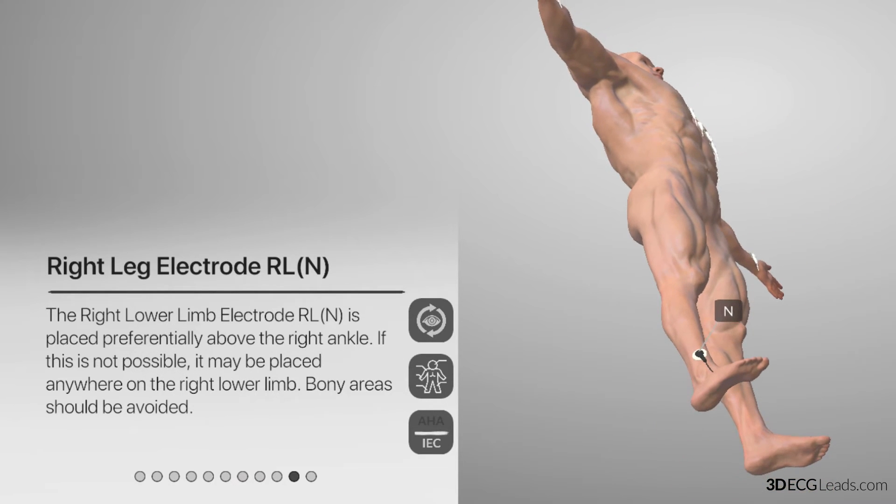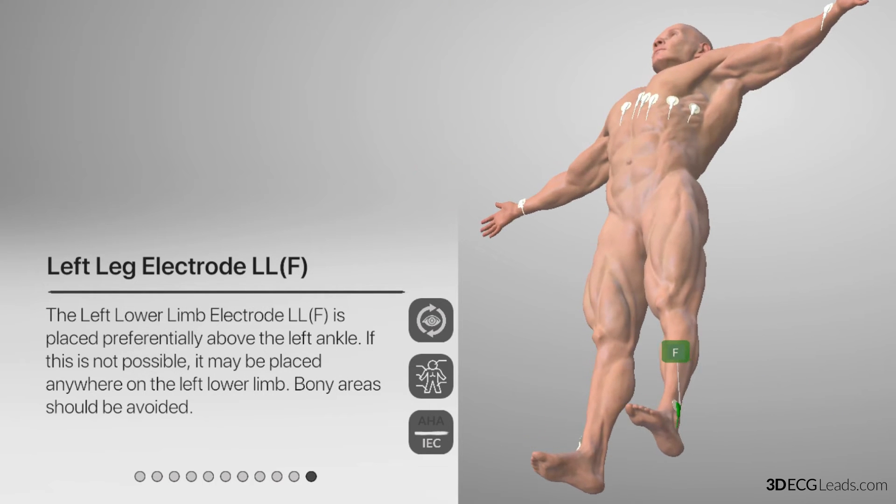Down to the right leg lead, it is named N, and is black instead of green. And lastly, the left leg lead is named F, and is green instead of red.